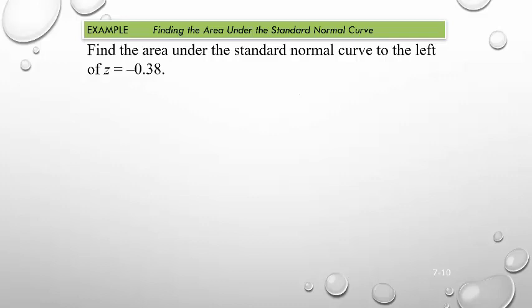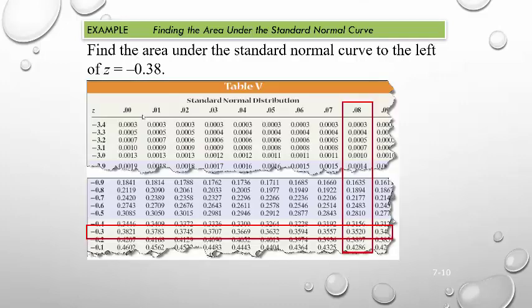I want to find the area under the standard normal curve to the left of z equals negative 0.38. You're going to have to find the negative side of the z-table. So you find the first two digits, negative 0.3. The last digit is an 8. Go down and over, and where they intersect, you should see 0.3528. That's the answer right there. So the area to the left of that value is 0.3528.